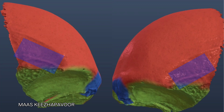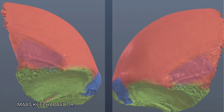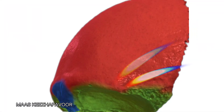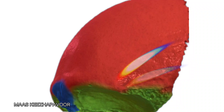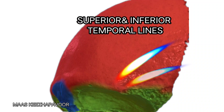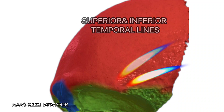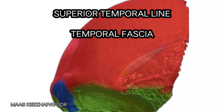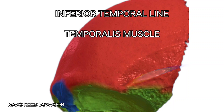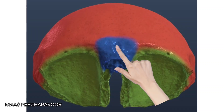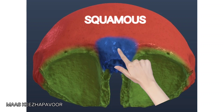The right and left temporal surfaces form part of the temporal fossa. A ridge starts from the zygomatic process, curves upward and backward, dividing into superior and inferior temporal lines. The superior temporal line gives attachment to the temporal fascia, and the inferior temporal line gives origin to the temporalis muscle.